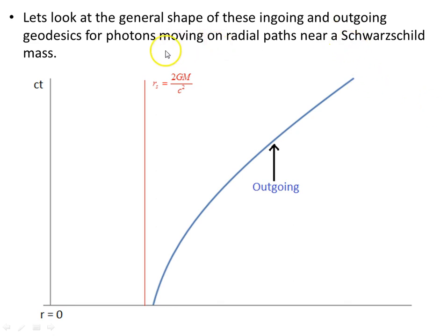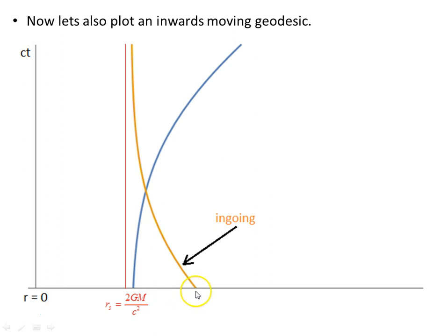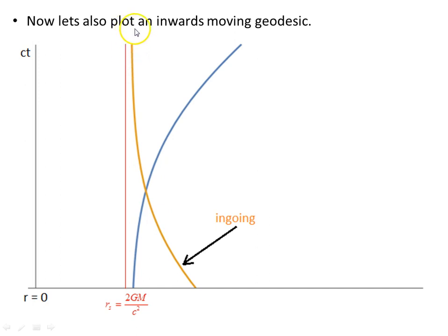Let's look at the general shape of these ingoing and outgoing geodesics for photons moving on radial paths near a Schwarzschild mass. The outgoing and ingoing geodesics both asymptote towards the Schwarzschild radius, getting arbitrarily closer and closer but not actually crossing. So for an observer far out at infinity, the photon gets arbitrarily close to the Schwarzschild radius but never actually crosses it — it takes an infinite amount of time, crossing only in the infinite far future.